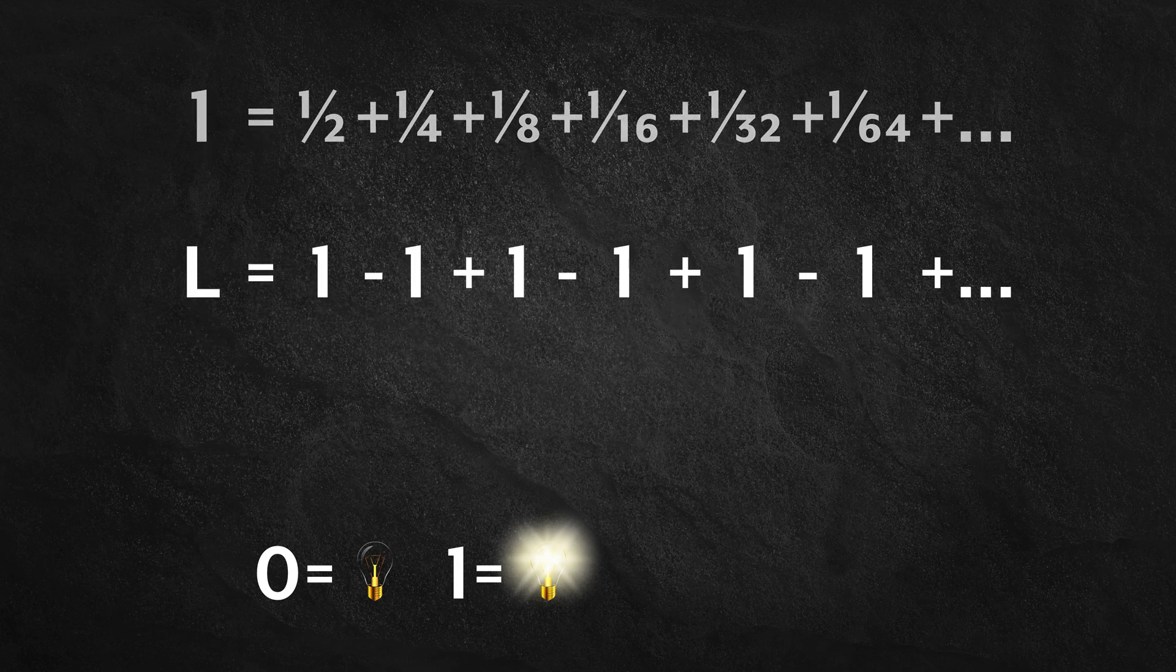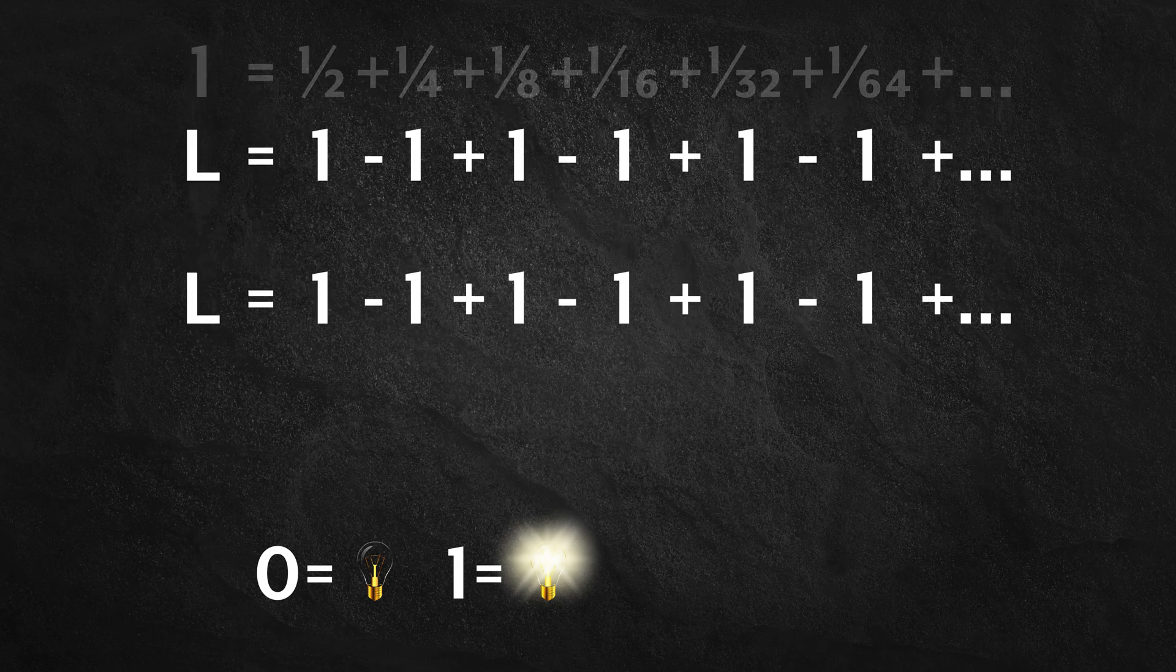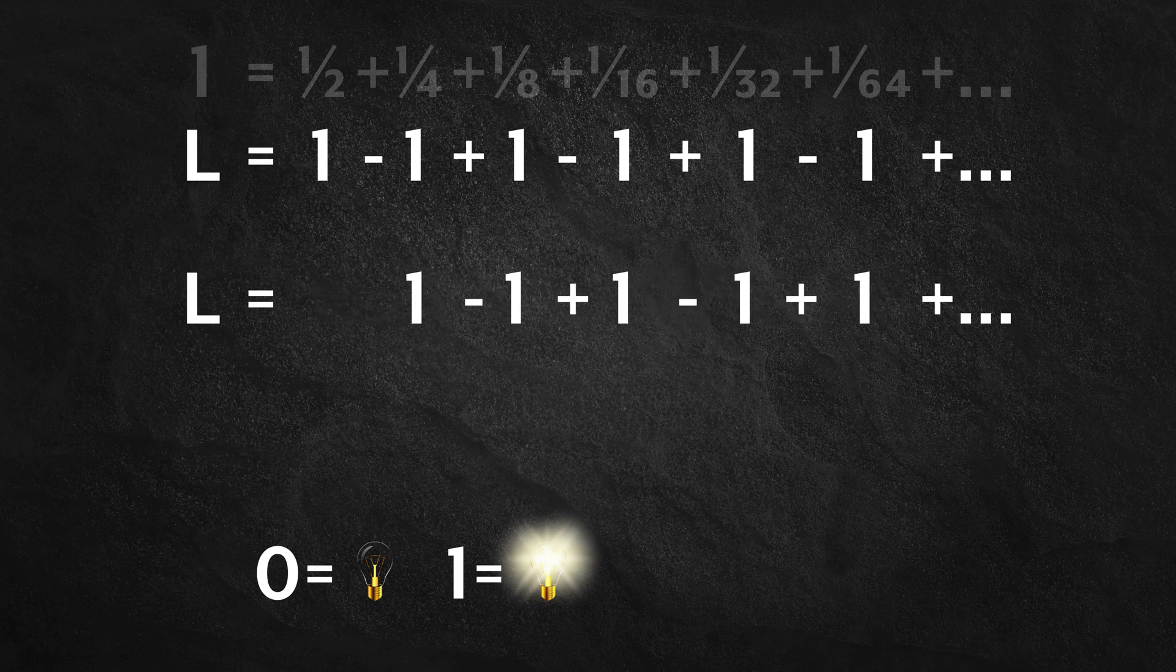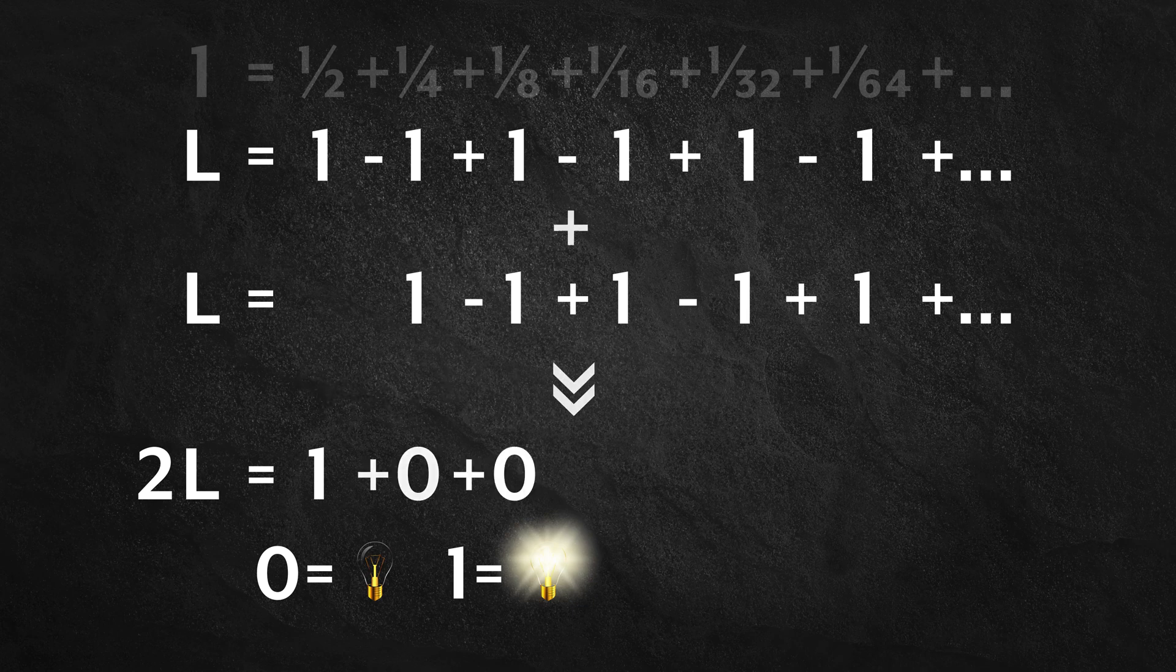Let's call it L. Let's take this equation and shift all terms one term to the right. And we'll add these two equations to get 2L equals 1. L equals a half.